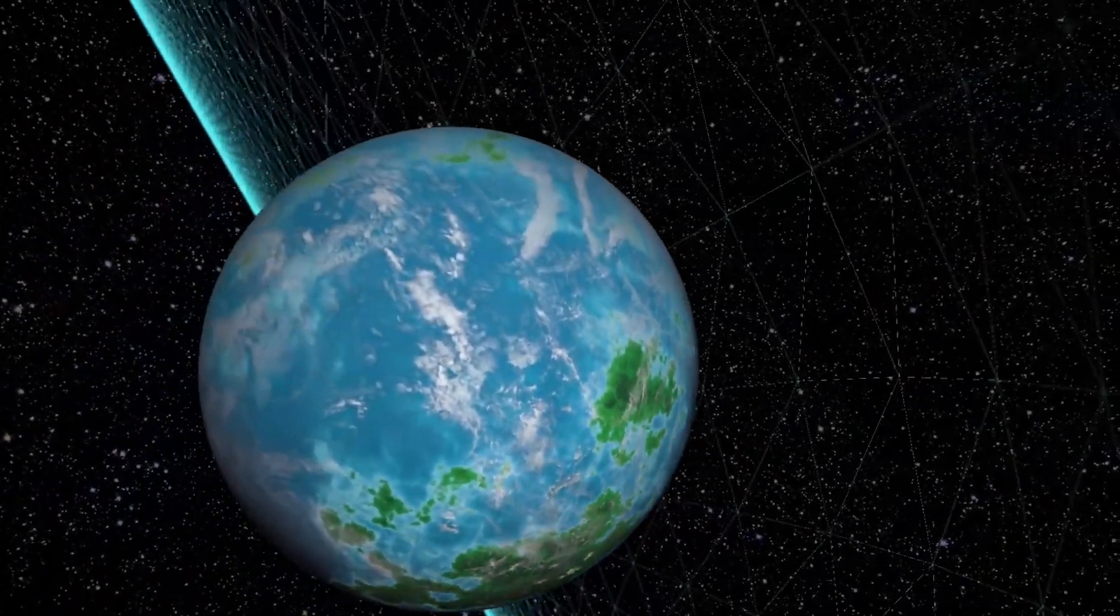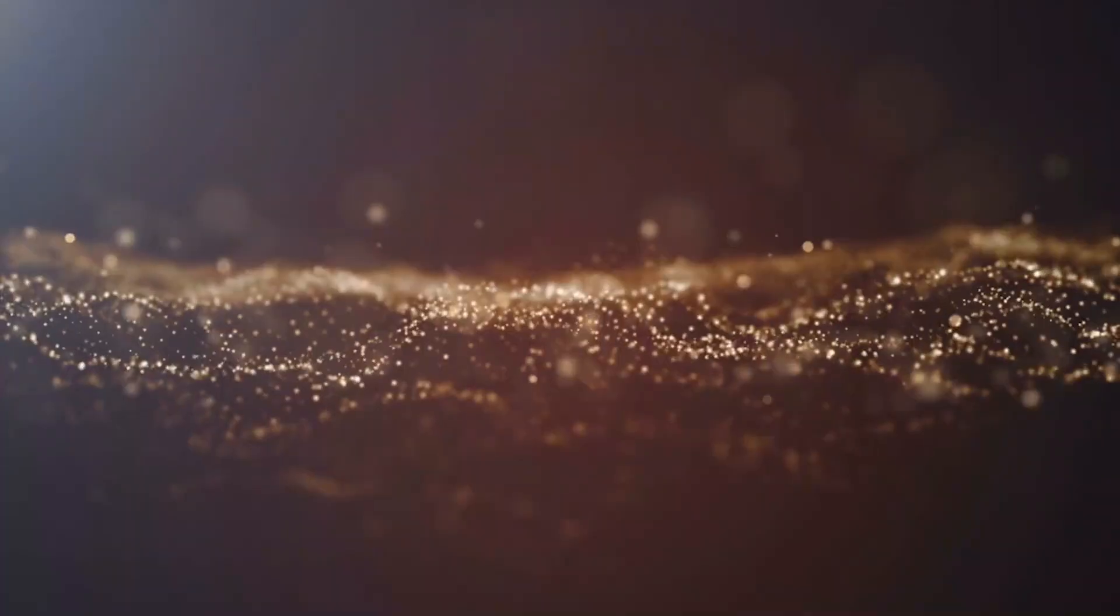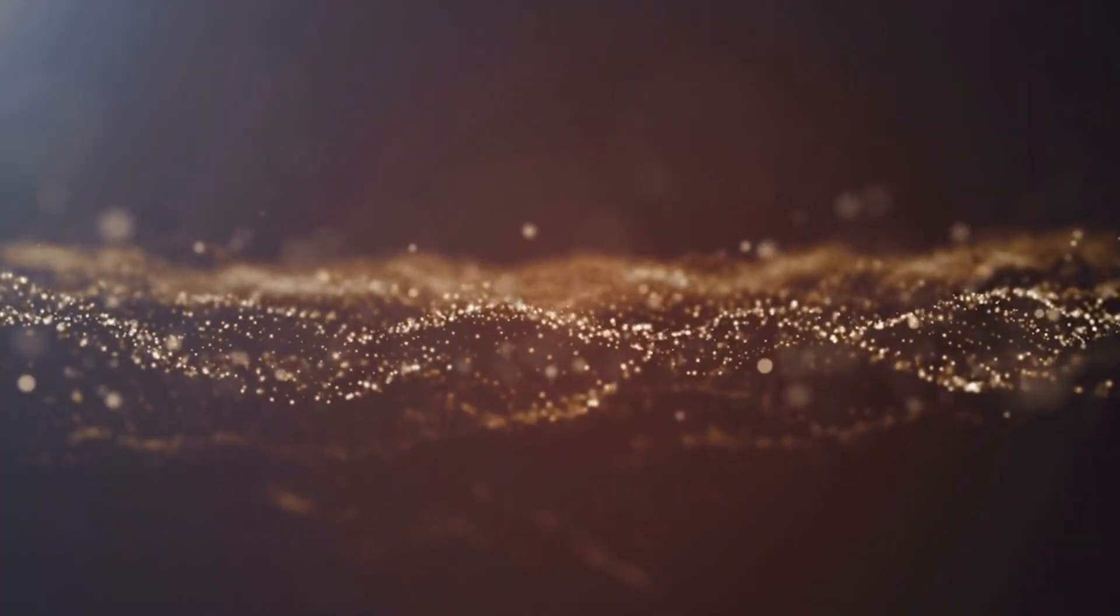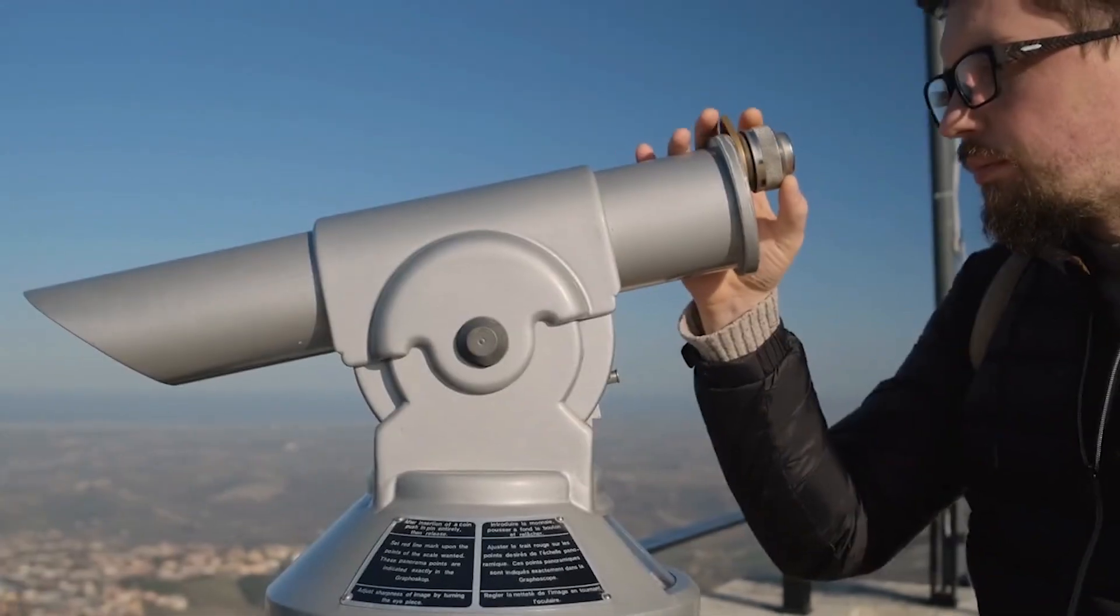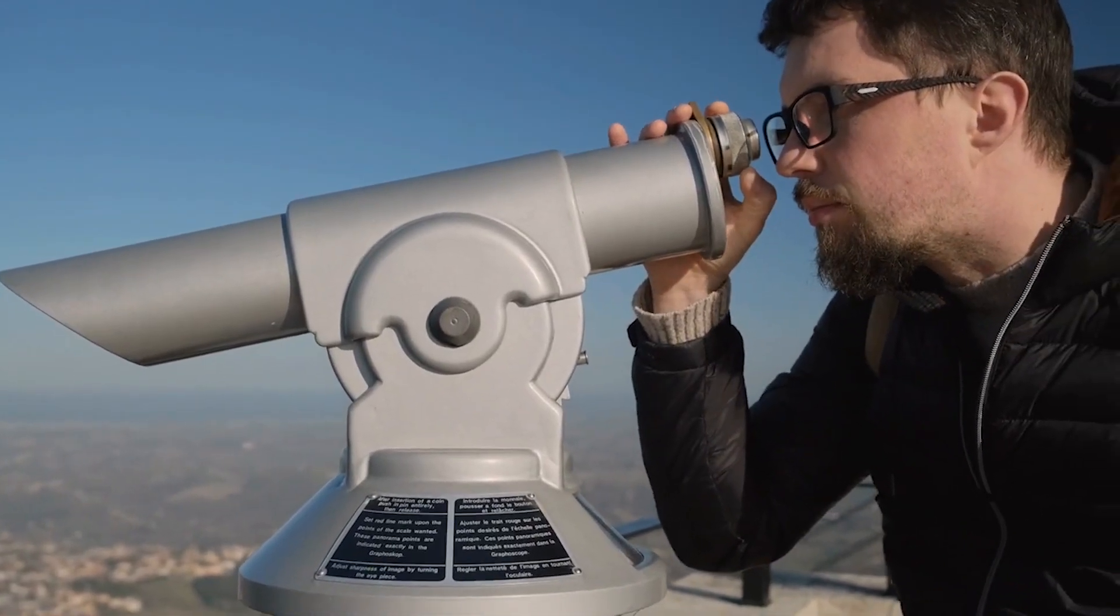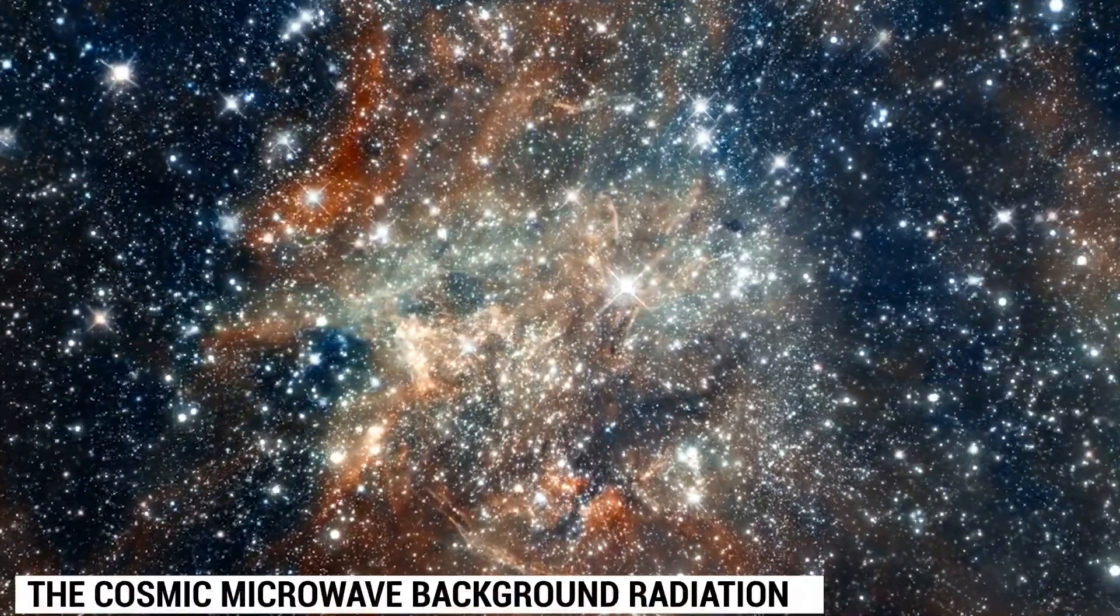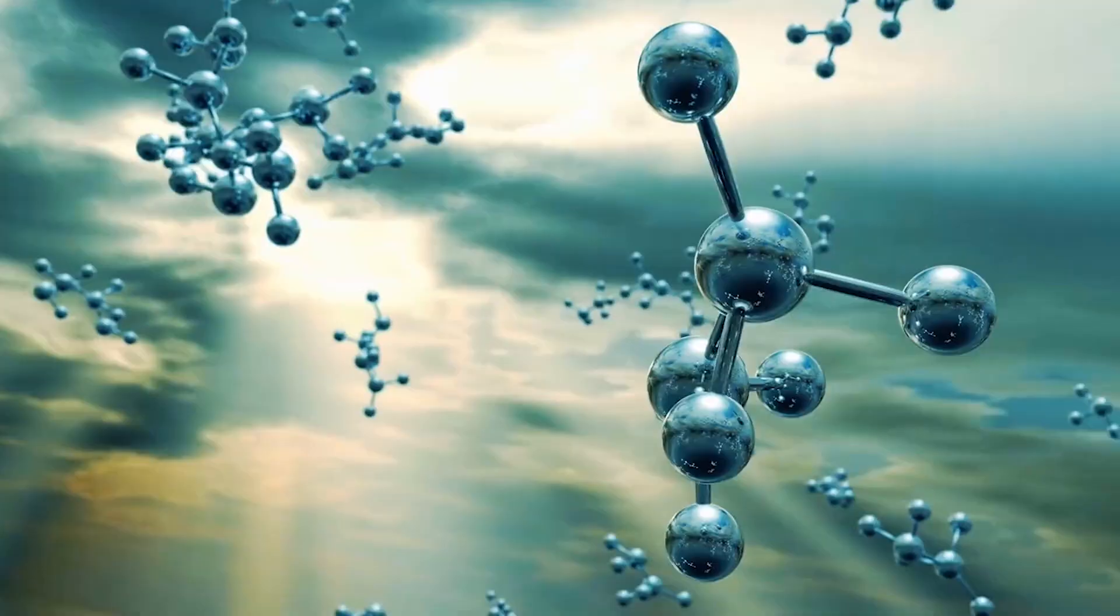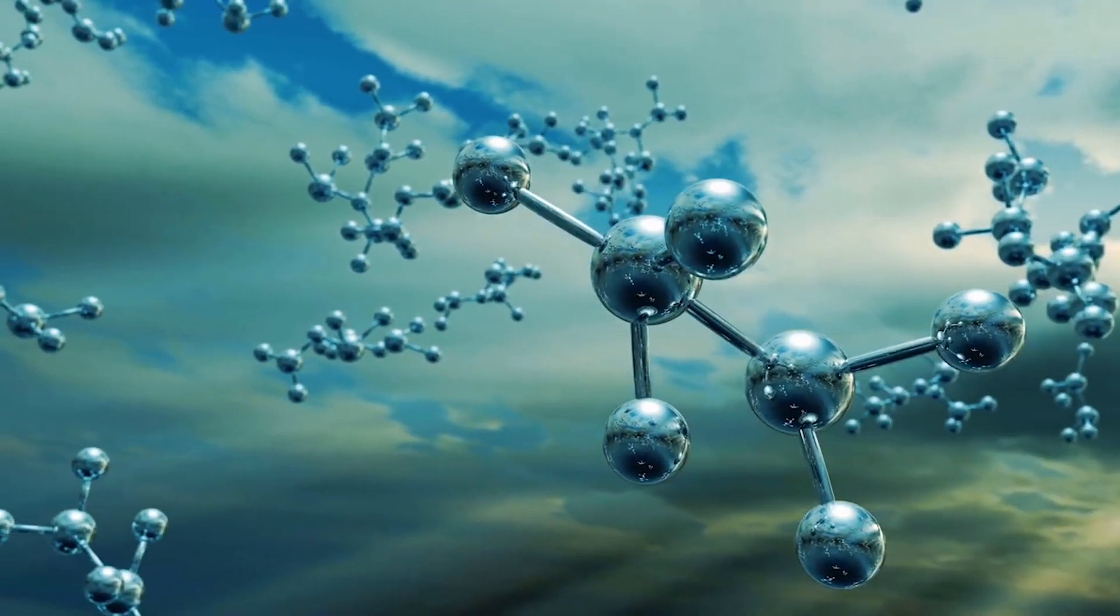We have also not observed any objects that are older than 13.7 billion years, all of which is the reason why we believe our universe came to existence around that time. So the key observations that support the Big Bang Theory include the expansion of the universe, the cosmic microwave background radiation, the abundance of the lightest chemical elements, and the age of the oldest known stars.